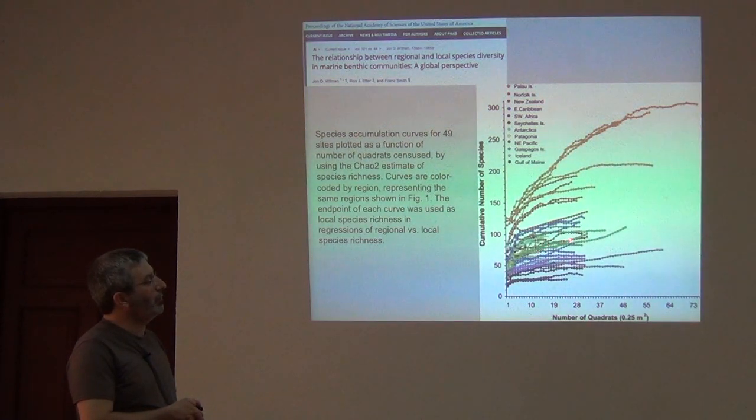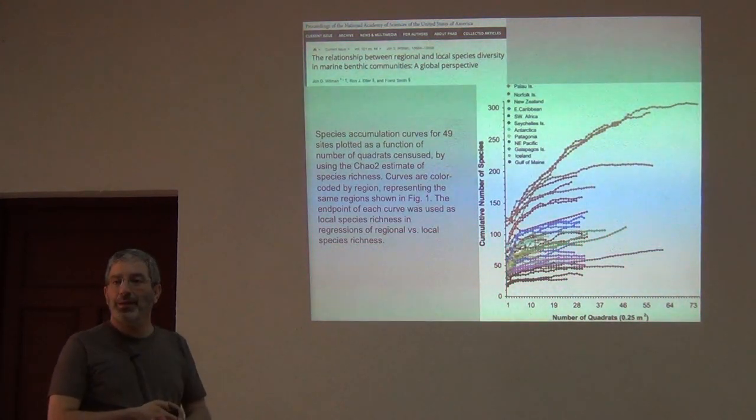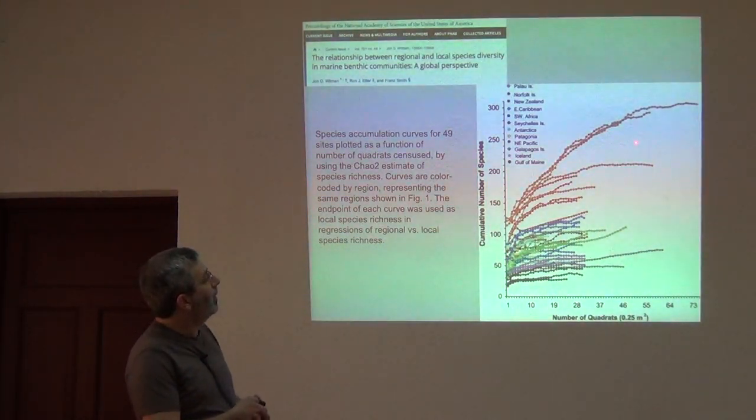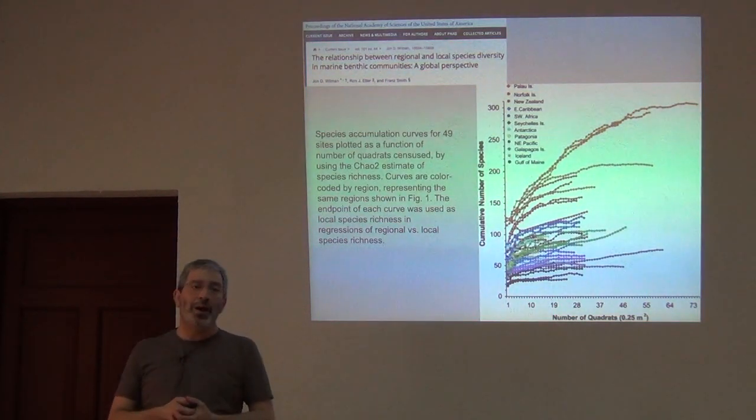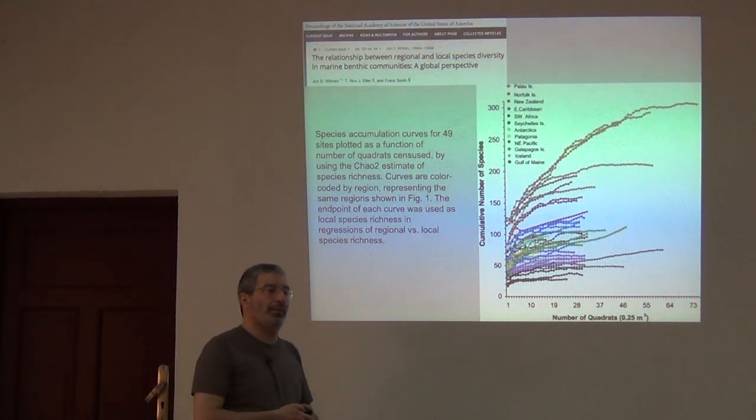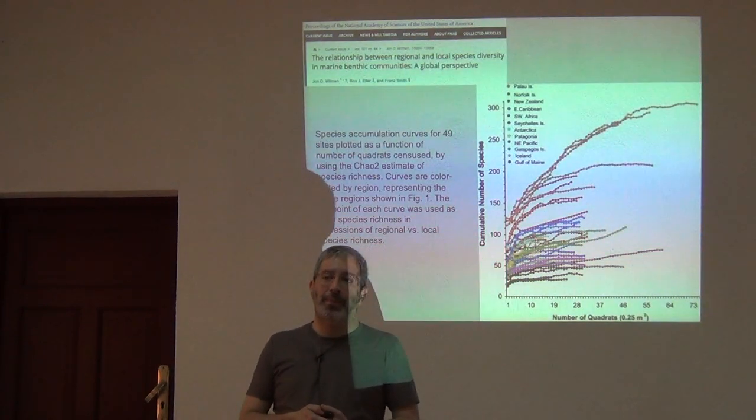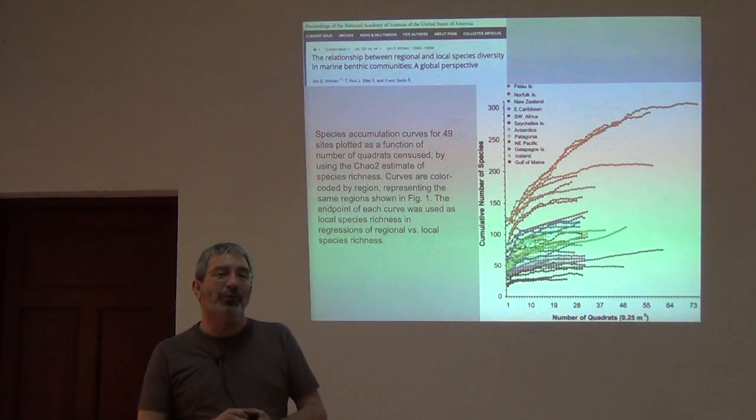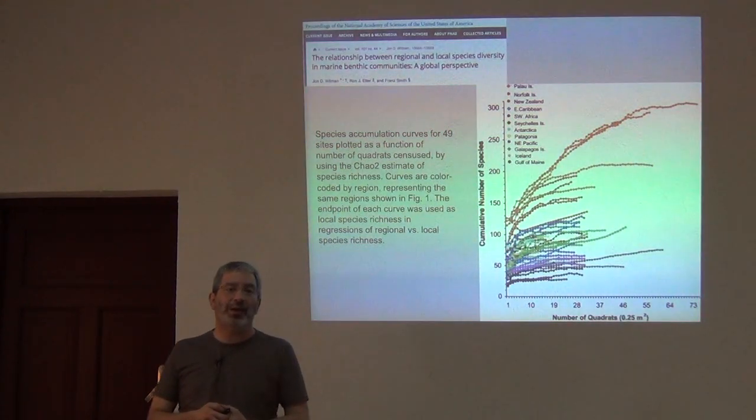Or here, this one was leveling off, this green one was leveling off, and then it started to go up again. Here's another big bump. Any idea why that happens? It happens when there's heterogeneity amongst your samples.